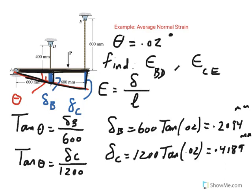Okay. So now all we have to do is to use this equation here and take delta B and divide by length of BD and delta C and divide by the initial length of CE, which is 400 and 600 respectively. So let's go to the next page.